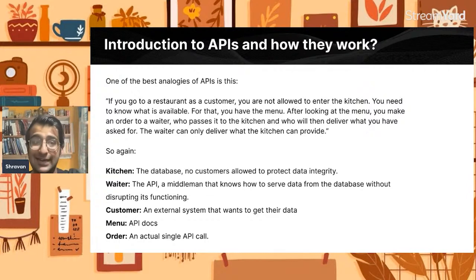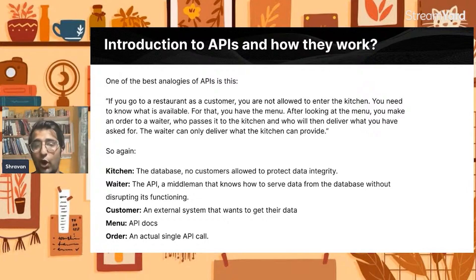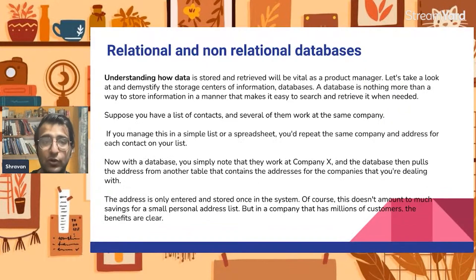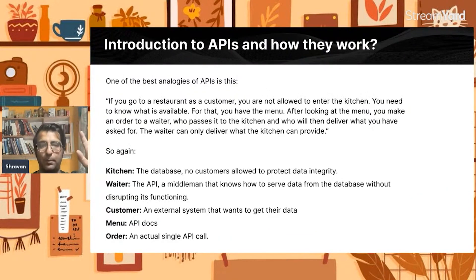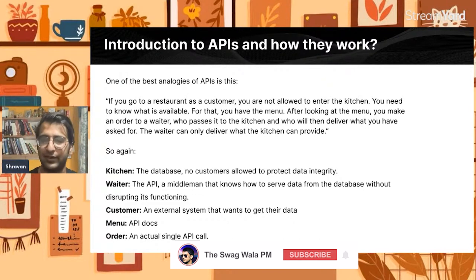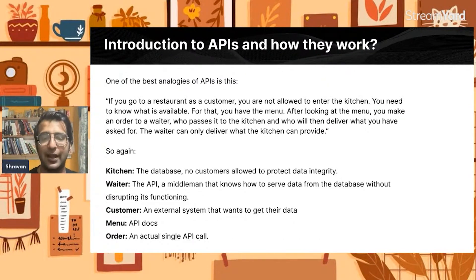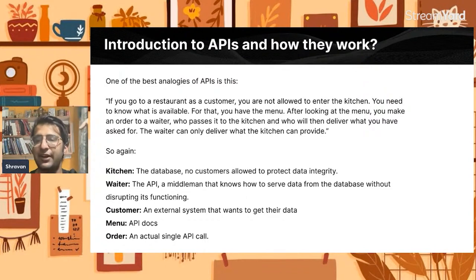So to recap: the kitchen is the database, the waiter is the API, the customer is you, the menu is the API docs, and the order is the API call. This is where we stop today's lecture — next time we will cover the next part. Please like the video and subscribe to the channel. Thank you very much.